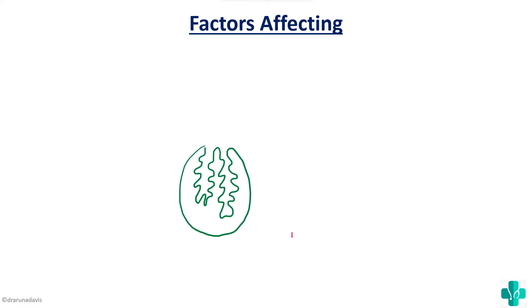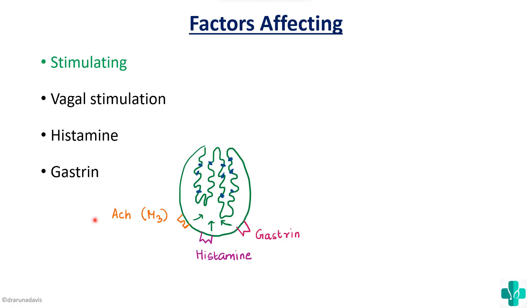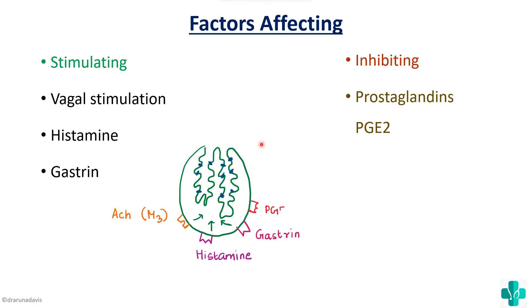The factors affecting HCL secretion include stimulators and inhibitors. Stimulators include vagal stimulation (which releases acetylcholine acting on M3 receptors on the parietal cell), histamine, and gastrin — all increasing parietal cell activity to produce more HCL. Inhibitors include prostaglandin E2, which inhibits gastric secretion, and somatostatin, which also inhibits parietal cell secretion.